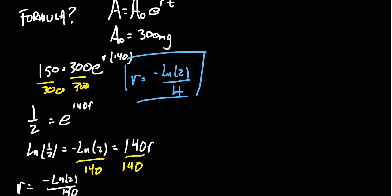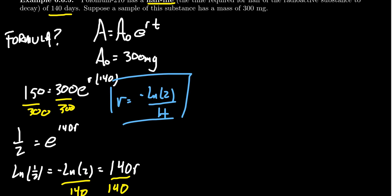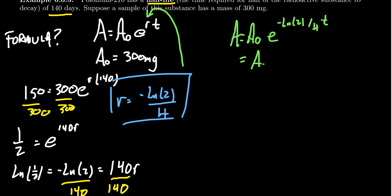If you make that substitution into this formula, A equals A₀e to the negative ln(2) divided by h times t. We're going to play a little trick. I'm going to bring this negative sign inside of the logarithm, so it's the natural log of one-half again. Then we have t over h.